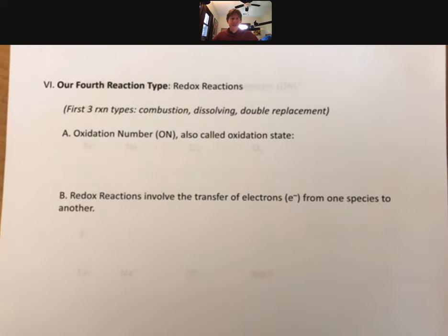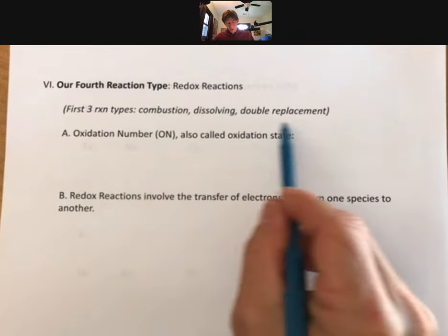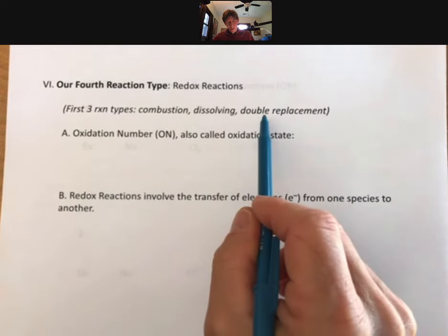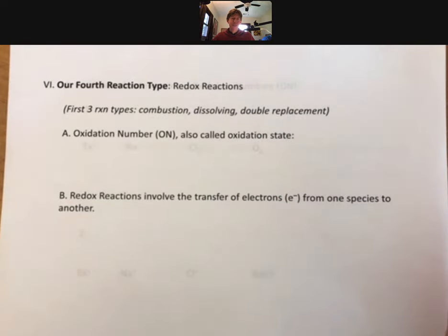Perhaps you're starting to see why this lecture outline is called chemical reactions. We're up to our fourth and final reaction type for this lecture outline: redox reactions. And we've listed our first three here. And of course, double replacement has three subtypes that we just covered.